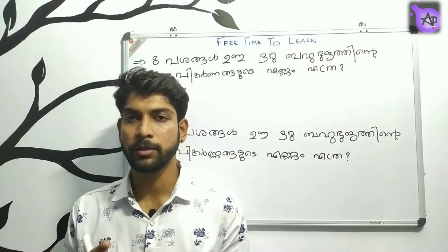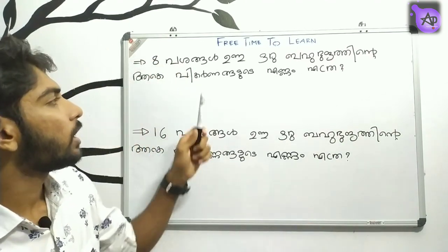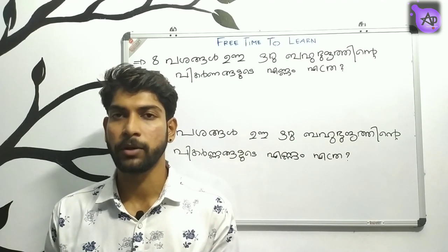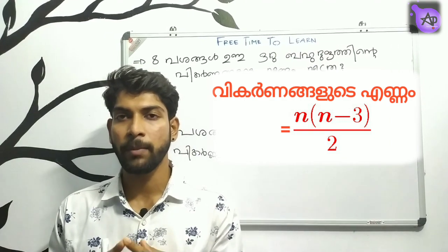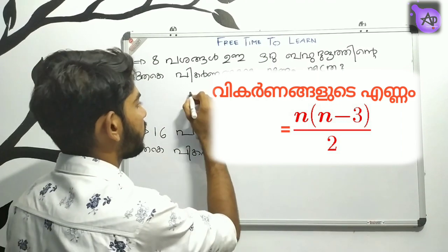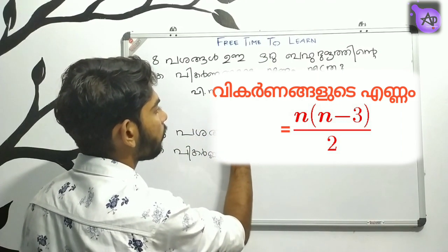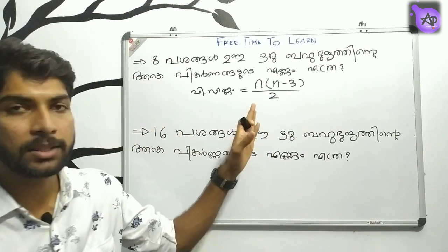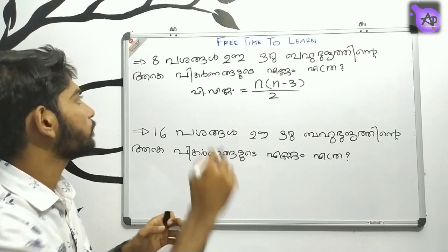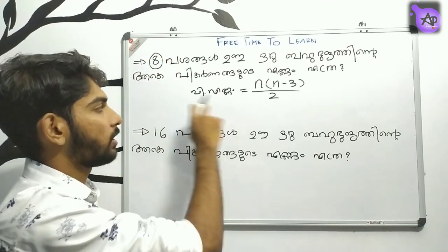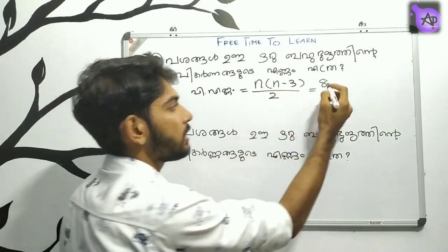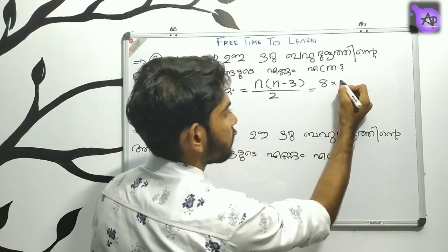We are going to talk about diagonals. One person asks: how many diagonals does a polygon have? That is the problem with n. So we have an equation with n. The number of diagonals equals n into (n minus 3) divided by 2.